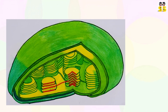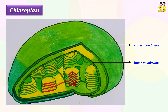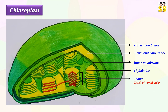Let us have a detailed look at the overall structure of plant chloroplast with an illustrative picture. This is the outer membrane, which is much more permeable than the inner membrane, which features a number of embedded membrane transport proteins. The area between the outer and inner layers of the chloroplast envelope is called the intermembrane space. These hollow disks, called thylakoids, are usually arranged into tight stacks called grana.